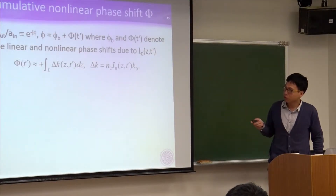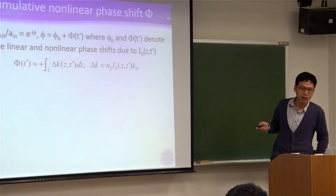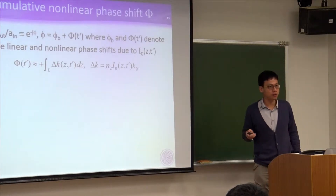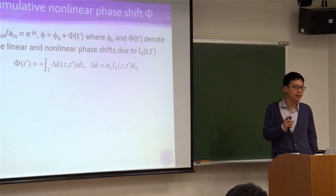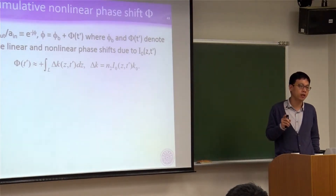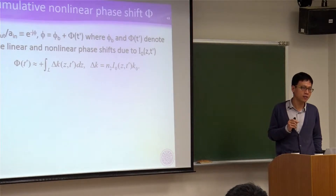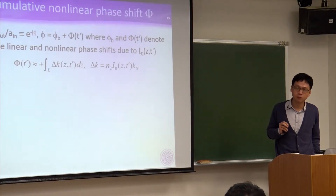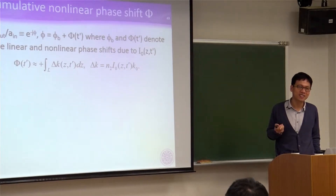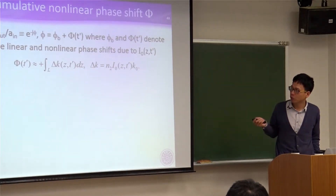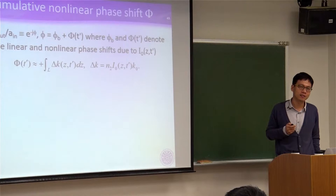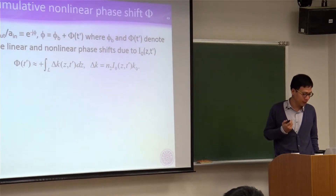In this case, delta k is a function of z. Since delta k is not a constant, you cannot get the cumulative phase shift by simply delta k times L — you have to perform integration. That's the idea.